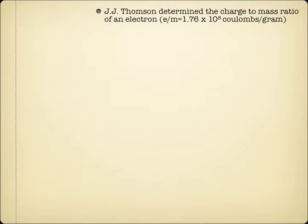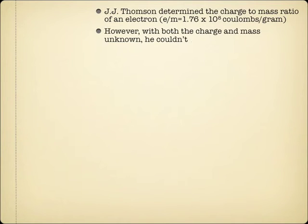Milliken built off the work of J.J. Thompson, of plum pudding model fame. J.J. Thompson realized that atoms were divisible, that there were electrons inside of them, and a hazy positive charge. He realized there was a relationship between the charge and mass of an electron. But like any equation with two unknowns, he needed to know one or the other to solve for the remaining one. Since he only knew the ratio of the relationship and not the value of either one, he could never solve for the mass nor the charge of an electron.